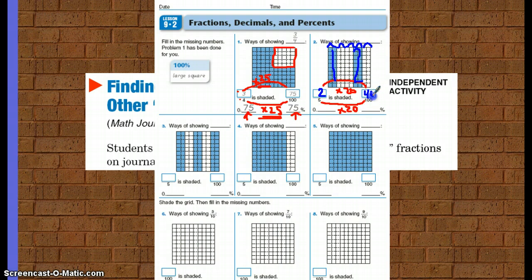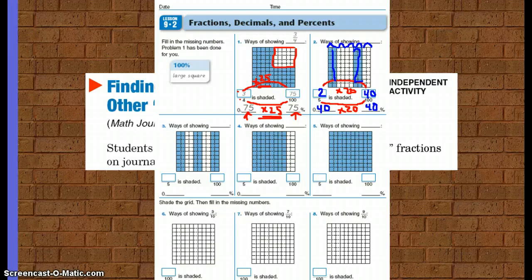So 40 hundredths is shaded. How do I write that? 0.40. And what does that become as a percent? 40 percent. Go ahead and finish this page, and then go into your math journal, and correct it at the front of the room.